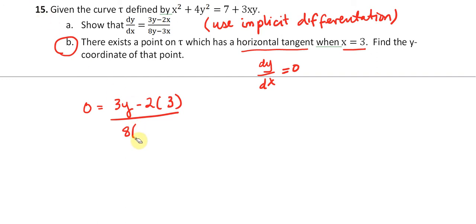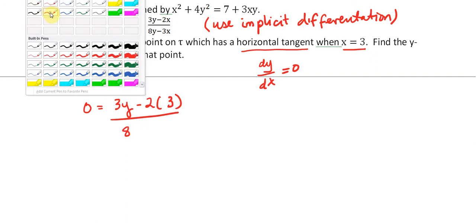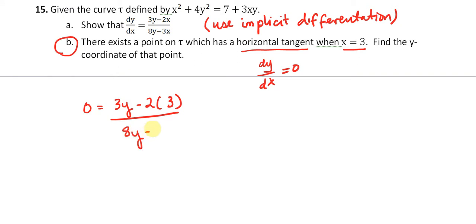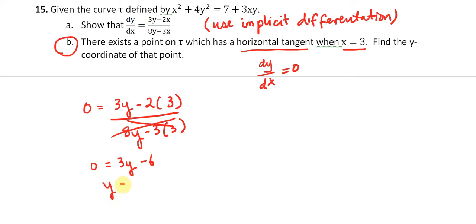We have 8y in the denominator. We can cross out the denominator because if the numerator is zero, everything is zero. Solving this, we have 3y minus 6 equal to 0, so y must equal 2. That means this curve has a horizontal tangent at the point (3, 2).